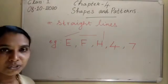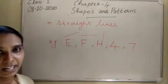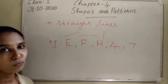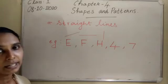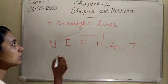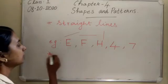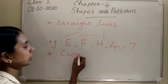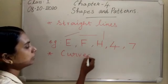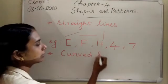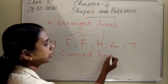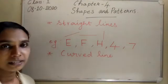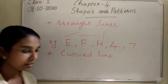Number 7 is also made using straight lines. I hope you have understood what straight lines are. Next is curved line. Draw a curved line.